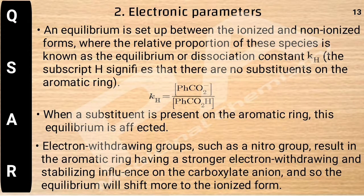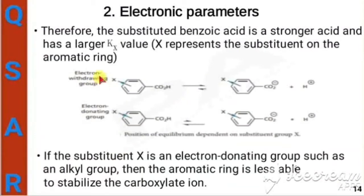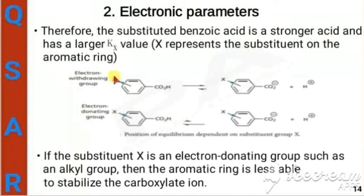If a substituent is present on the aromatic ring, this equilibrium is affected. For example, if the substituent is an electron-withdrawing group such as a nitro group, the aromatic ring has a stronger electron-withdrawing ability and a stronger stabilizing effect on the carboxylate ion. That's why the equilibrium will shift more to the ionized form. If an electron-donating group is present, the equilibrium shifts more to the unionized form. The substituted benzoic acid is therefore a stronger acid with a larger kX value.